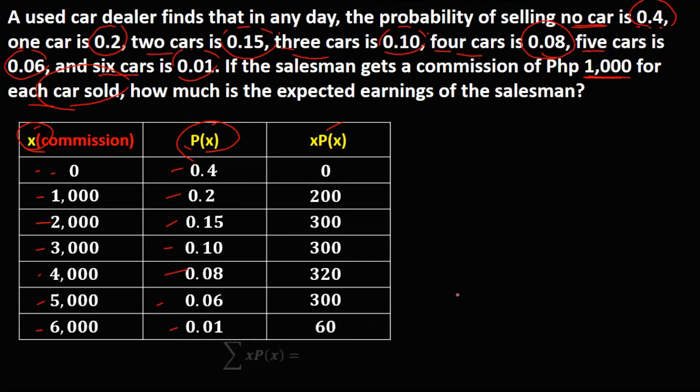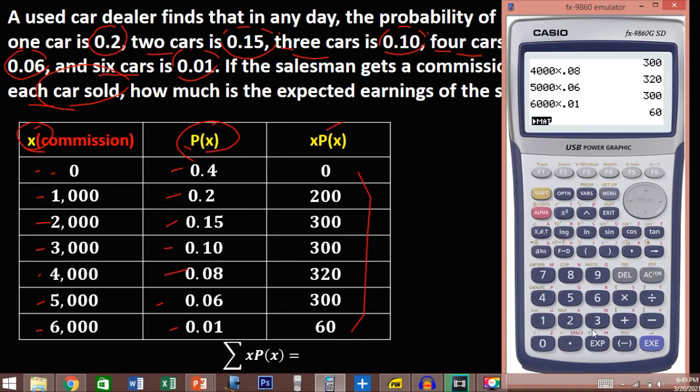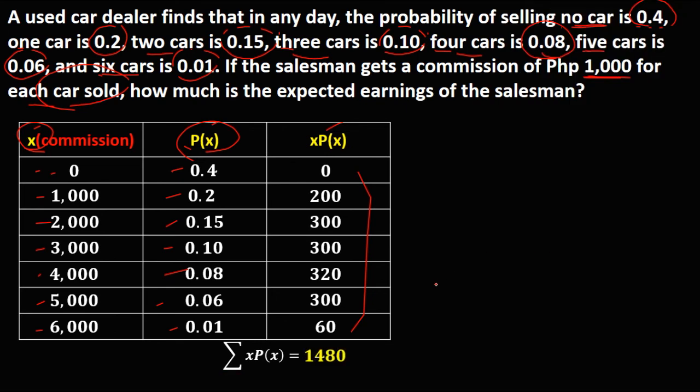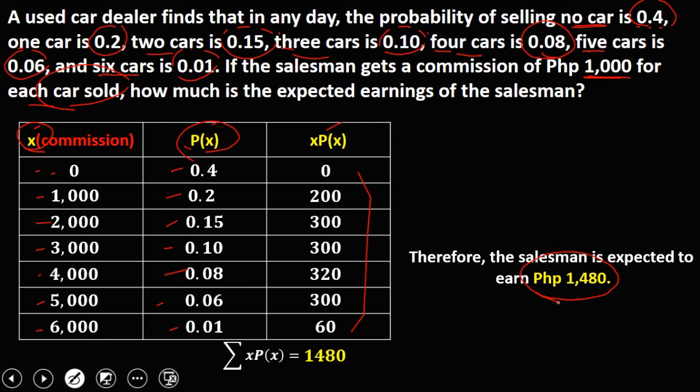To compute now for the expected value, add all these numbers. So that's 200 plus 300 plus 300 plus 320 plus 300 and plus 60. This is now the expected value, so therefore, the salesman is expected to earn 1,480 pesos.